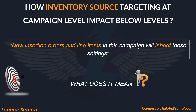Now let's understand how inventory source targeting at campaign level impacts the levels below. Whatever you select in the inventory source targeting, it will impact new insertion orders and line items. When you create new IOs and line items under this campaign, they will inherit these settings. Note that only new ones are affected — existing ones are not.